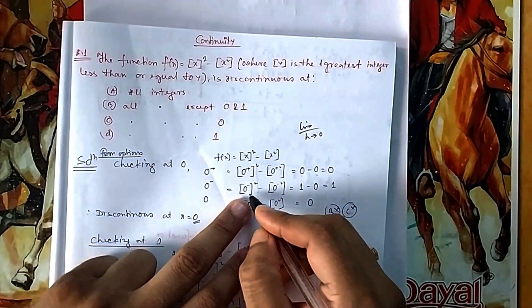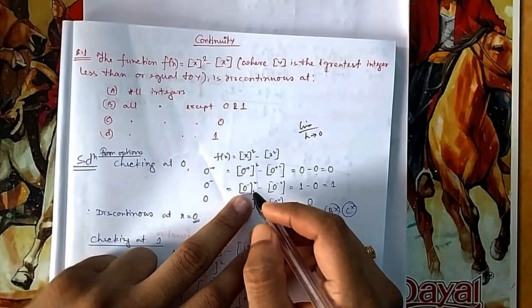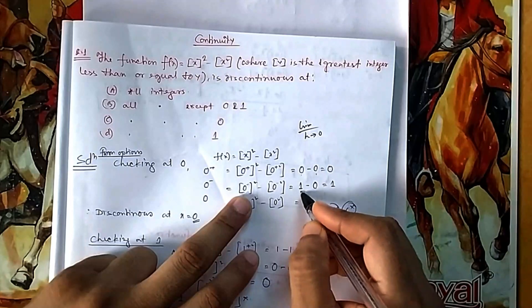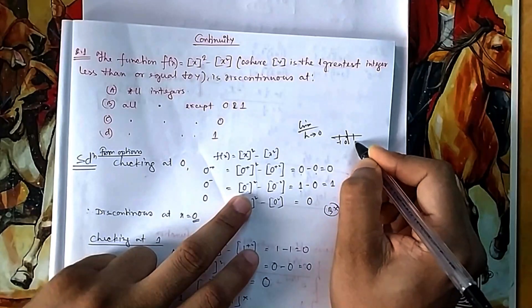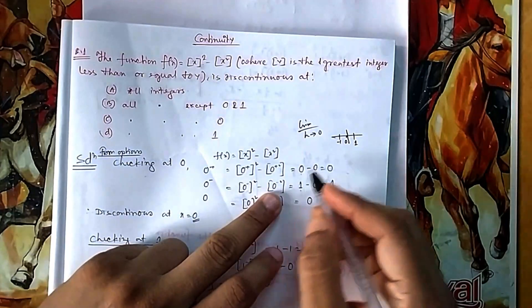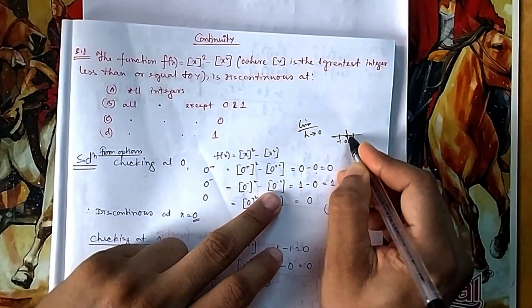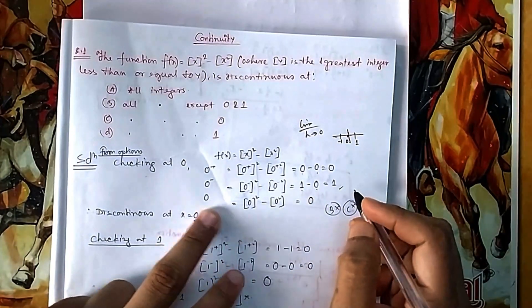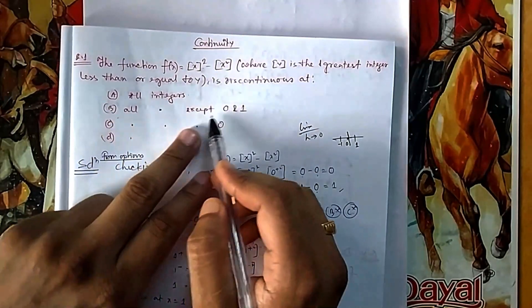For the left-hand limit (0−), you are plugging in something like −0.0000001. The greatest integer of a small negative number gives −1, so [x]² = (−1)² = 1. For [x²] at 0−, squaring a small negative gives a small positive, so the floor is 0. Since LHL = 1 and RHL = 0, they are not equal, so the function is not continuous at 0.